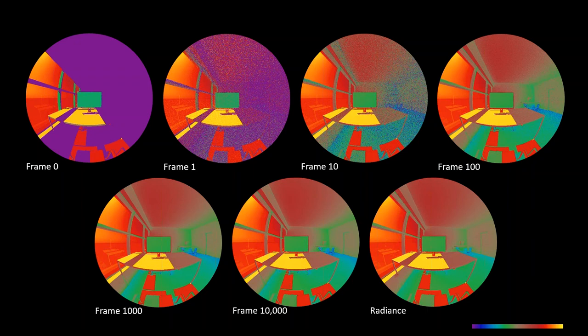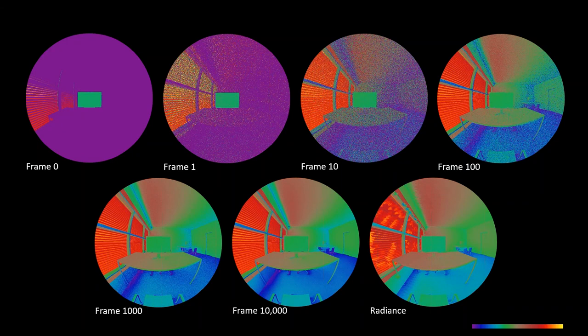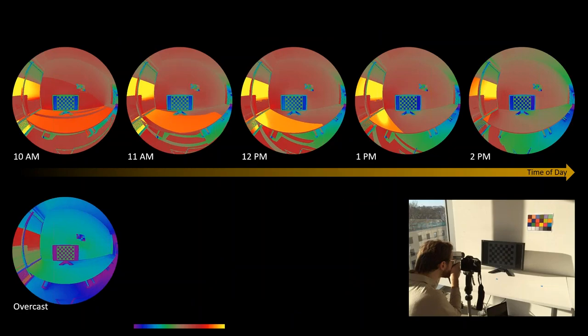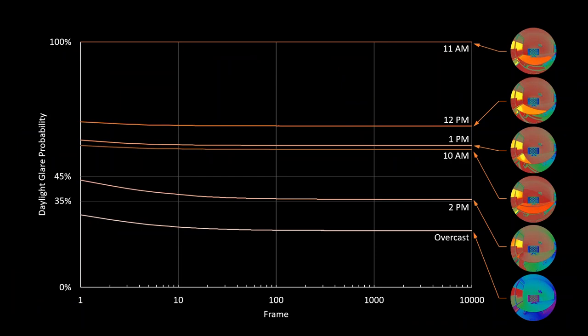In a space with blinds, path tracing also produces an accurate simulation—in fact better than Radiance because it avoids irradiance caching inaccuracies. I tested this in the MIT Media Lab, taking HDR photographs at multiple times on sunny and overcast days. Comparing by daylight glare probability: by frame 10,000 the prediction is very accurate. Notably, by frame 10—taking only about two seconds at 200 milliseconds per frame—the result is already quite accurate. Even the very first frame is often good enough to determine whether glare exceeds the 35% or 45% thresholds.